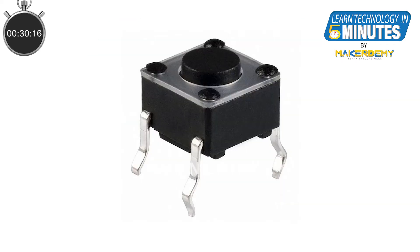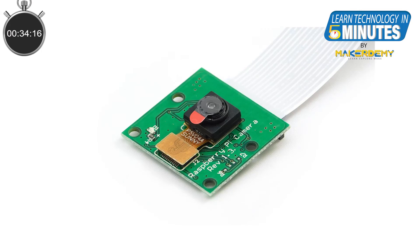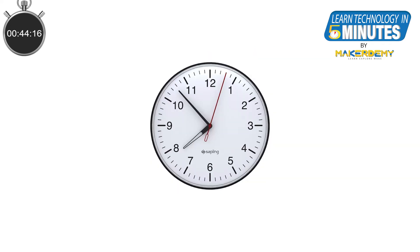For example, the sensor can be as simple as a push button, a temperature sensor, or a Pi camera module. It doesn't even need to be a physical hardware. For instance, a feed of temperature in your city from the internet or the current time from the Pi's clock could both be inputs.